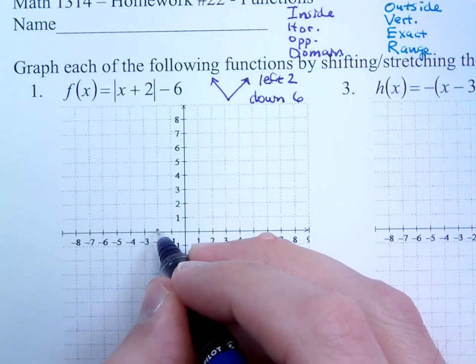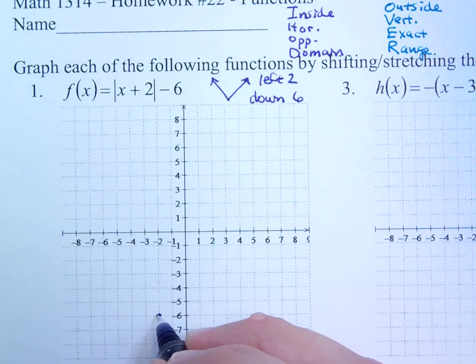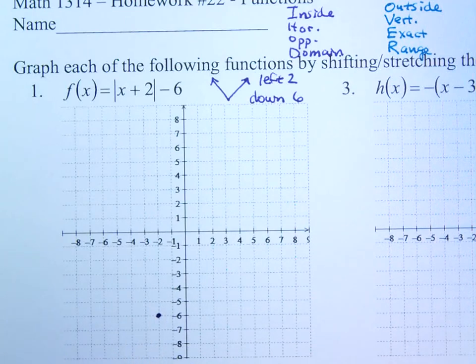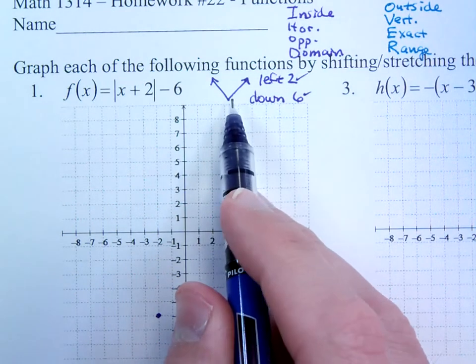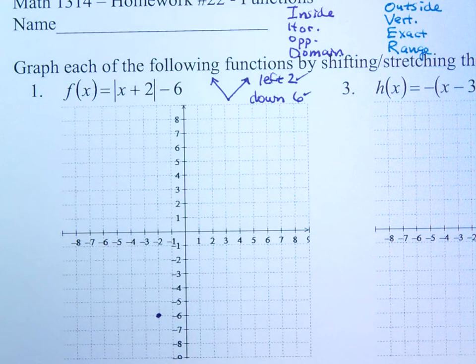The minus 6 on the outside tells me I'm going down 6. So left 2, down 6 is my vertex. That's my key point. Once I've gone left 2 and down 6, I don't really need these guys anymore. I just need to put this shape here for my absolute value.